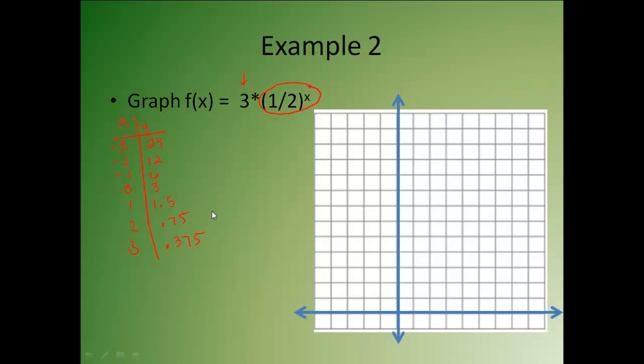So now when I graph these, if I do 3, I get 0.375. And 2 gives me 0.75. 1 gives me 1.5. 0 takes me clear up to 3. Negative 1 takes me up to 6. And negative 2 takes me up here to 12. So I'm not going to put the negative 3, 24 on my graph. And then I sketch it in.